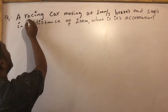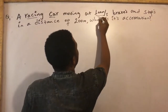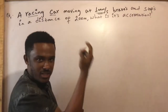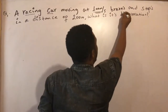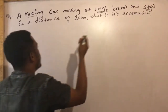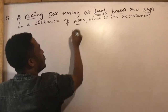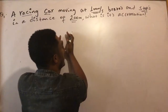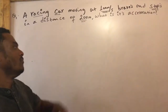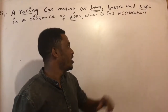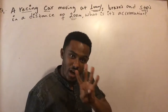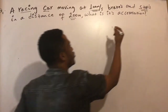The question says that a racing car moving at 100 meters per second applies brakes and finally stops. The final speed is zero. The distance is given, and we need to find the acceleration.